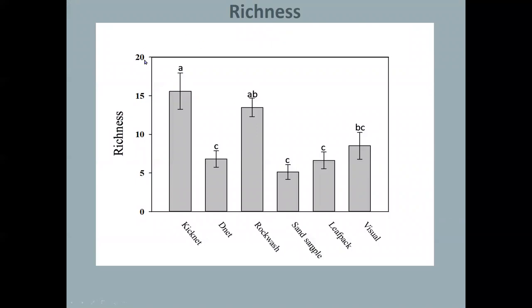Starting out with richness on the y-axis and the different sampling methods on the x-axis. Kicknet and Rockwash have very statistically similar values of richness. So 16 compared to about 13 taxa collected using Rockwash and Kicknet. Visual was a bit lower but similar to Rockwash. And that was a surprise for me. I wasn't expecting to collect so many different things with that simple five-minute visual sample. D-Net did have less, but that's expected. It's that very specific depositional habitat.